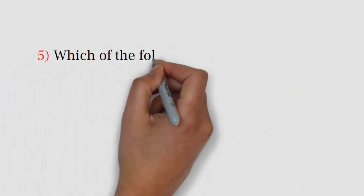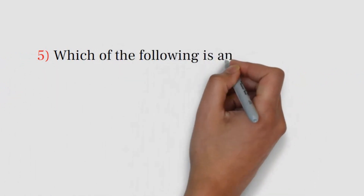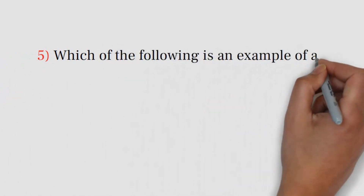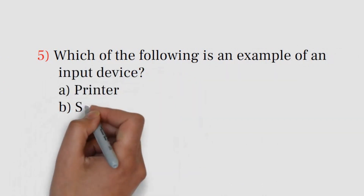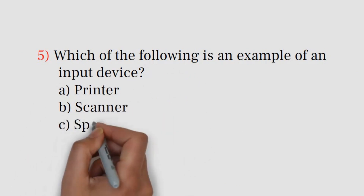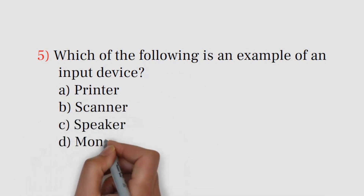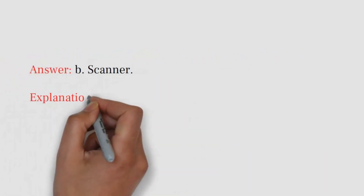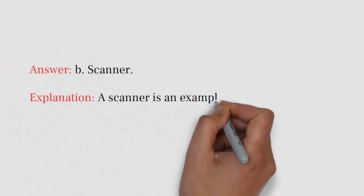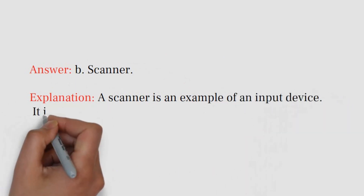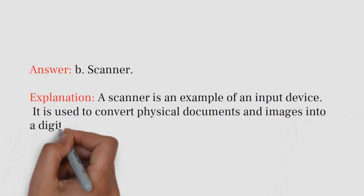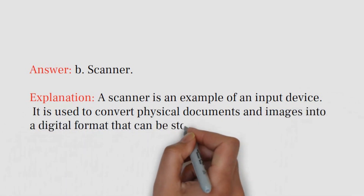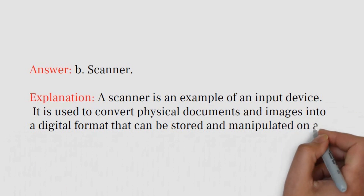Question number 5. Which of the following is an example of an input device? A. Printer. B. Scanner. C. Speaker. D. Monitor. Answer: B. Scanner. Explanation: A scanner is an example of an input device. It is used to convert physical documents and images into a digital format that can be stored and manipulated on a computer.